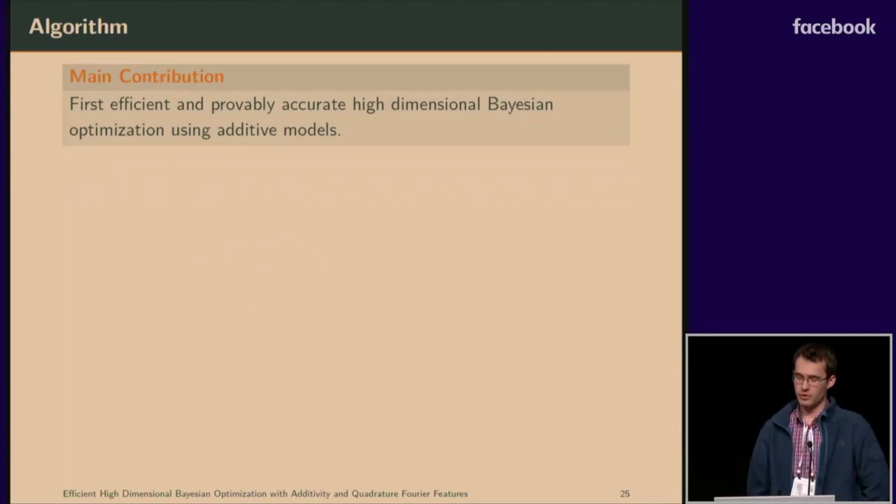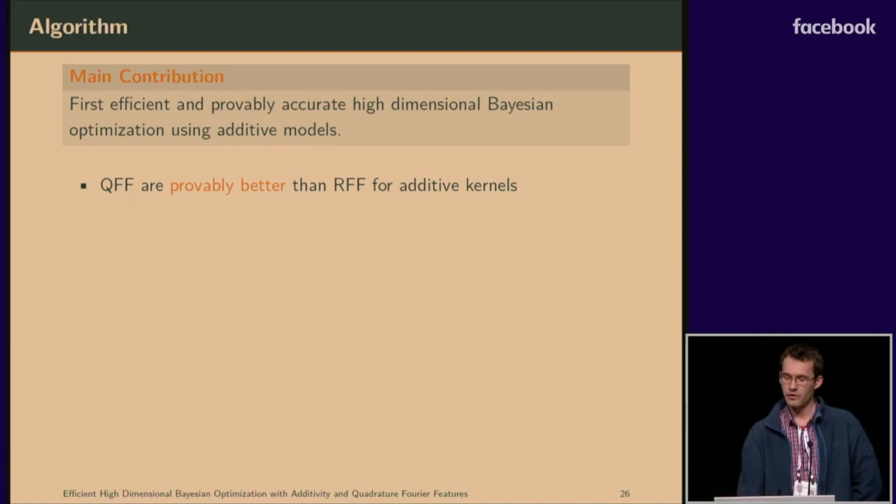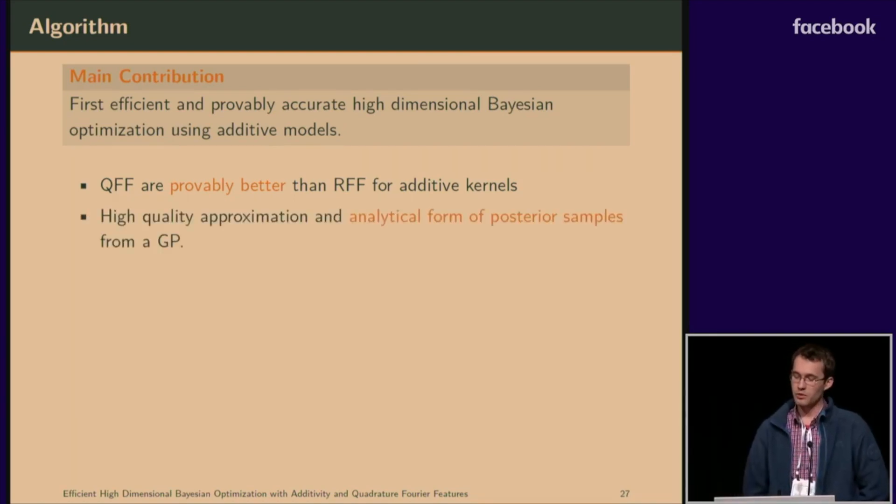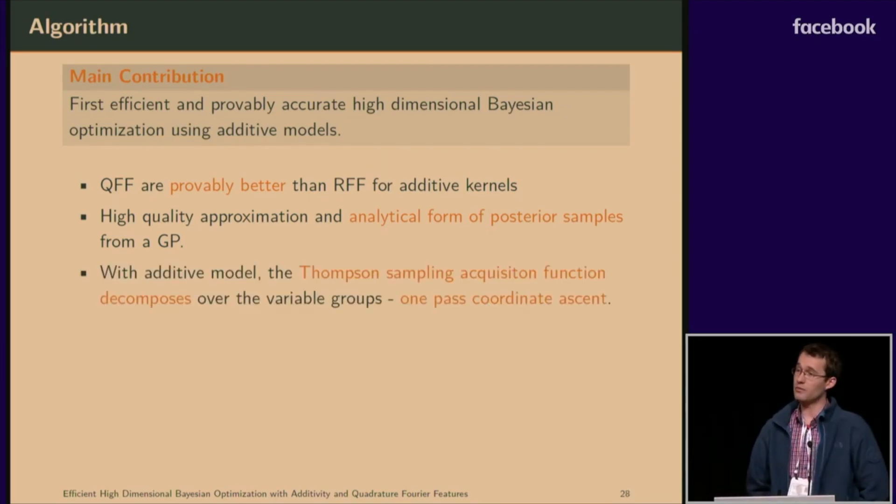So the main contribution of this paper is first, efficient and provably accurate high-dimensional Bayesian optimization using additive models. The ingredients which allow us to formulate this algorithm is firstly that quadrature Fourier features are provably better than random Fourier features for additive kernels. We are able to provide high-quality approximation and analytical form of posterior samples from a GP with additive model.